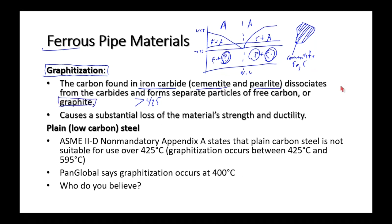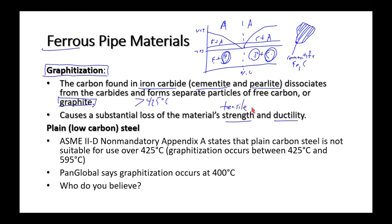We saw graphite before in gray cast iron, where graphite along grain boundaries makes it prone to fracture under tension — graphite is weak under tension. Above 425°C, graphitization is the process whereby iron carbide reverts to graphite, causing a loss in tensile strength and ductility. Graphitization is how plain carbon steel becomes weak at high temperature over a prolonged period.